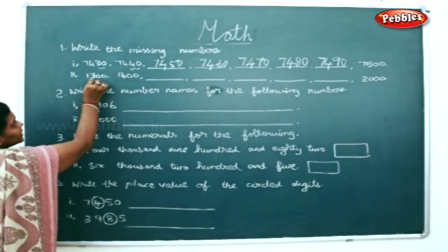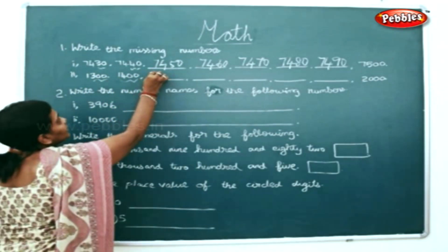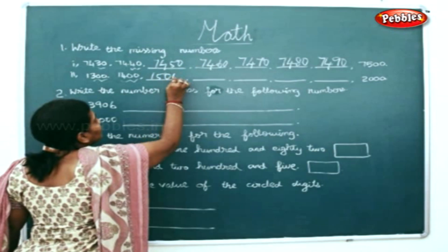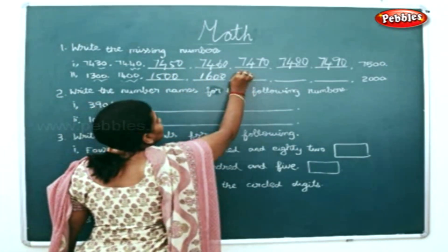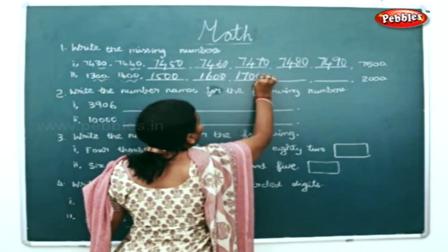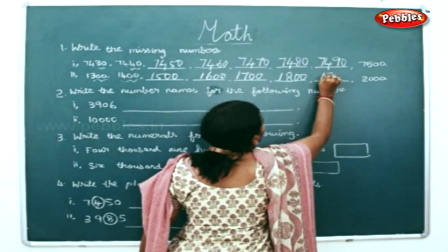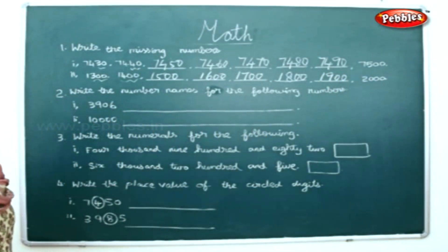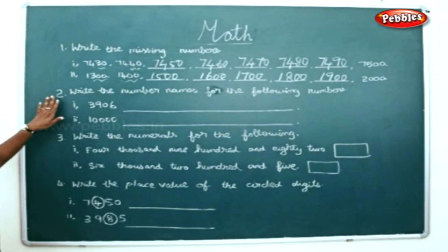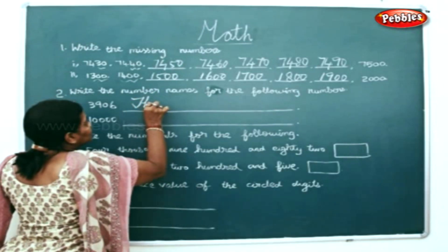It jumped in hundreds: 300, 400, now it will be 500, 600, 700, 800, 900, and 1000. Now write the number names for the following numbers.